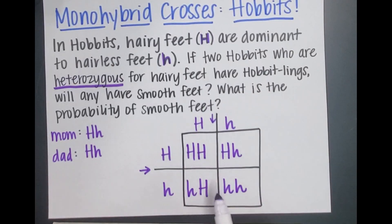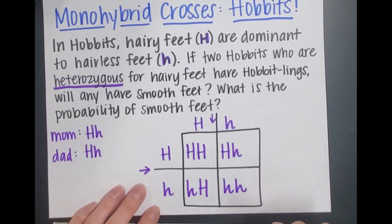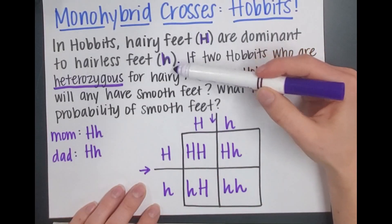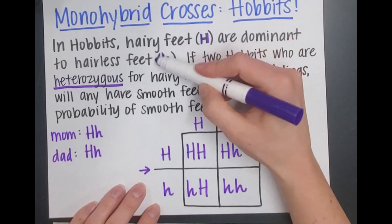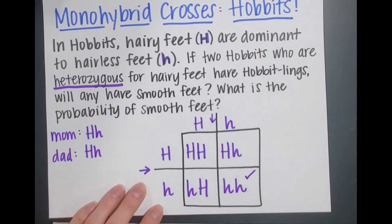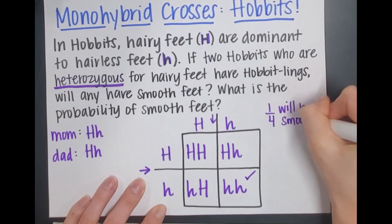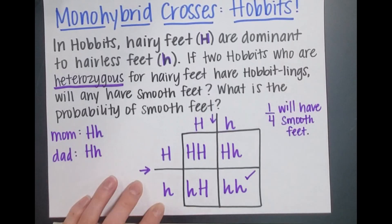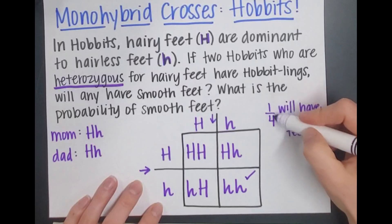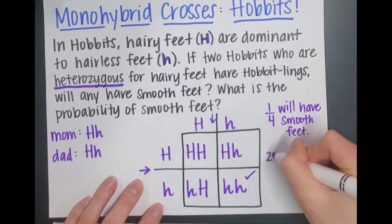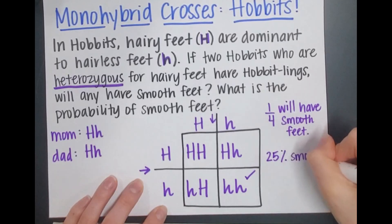Highly recommend making your letters very different if capitalized or lowercase — otherwise you may confuse yourself later. Hairless or smooth feet are recessive, so for a baby hobbitling to have them, they need only recessive alleles — only little h's. One out of four will have smooth or hairless feet. To convert to a percentage: think of four quarters equaling one dollar, and each quarter is 25 cents — so one out of four is 25%. So 25% will have smooth or hairless feet.